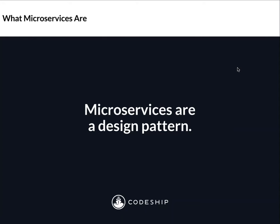Microservices are a design pattern — an architectural concept. They're not a technology; they're not Docker or containers. Microservices happen as much on the whiteboard as they do in your code itself. Rather than having one big core application that does everything, you have a whole bunch of smaller applications — individual pieces. Maybe payments is one application, maybe one user role is another. Through normalized APIs between your different services, they communicate and simulate the effect of one complete web application.